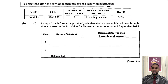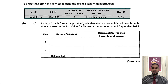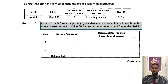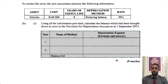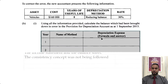So it says, to correct the error, the new accountant presents the following information. We have in this table: asset — vehicles; cost is $160,000; years of useful life — eight; depreciation method — reducing balance rate at 30%. So using all the information provided, calculate the balance which had been brought down in error in the provision for depreciation account as at 1st September 2015. They give you a nice little format to use here, and it's for five marks.